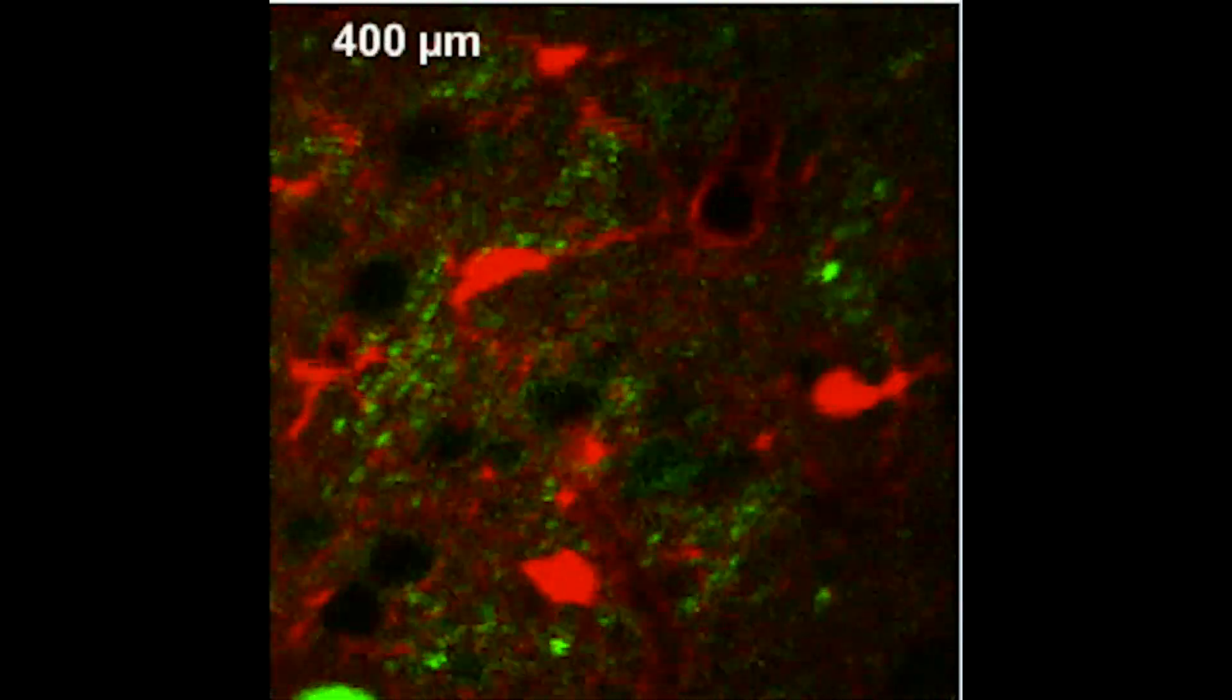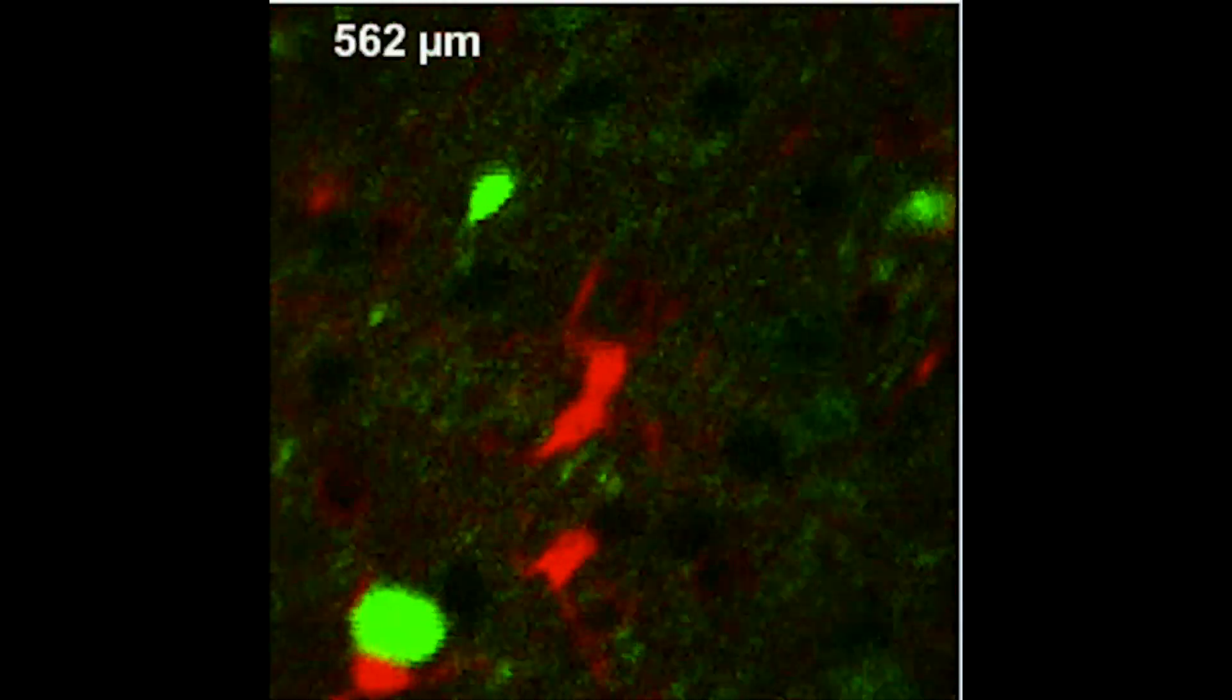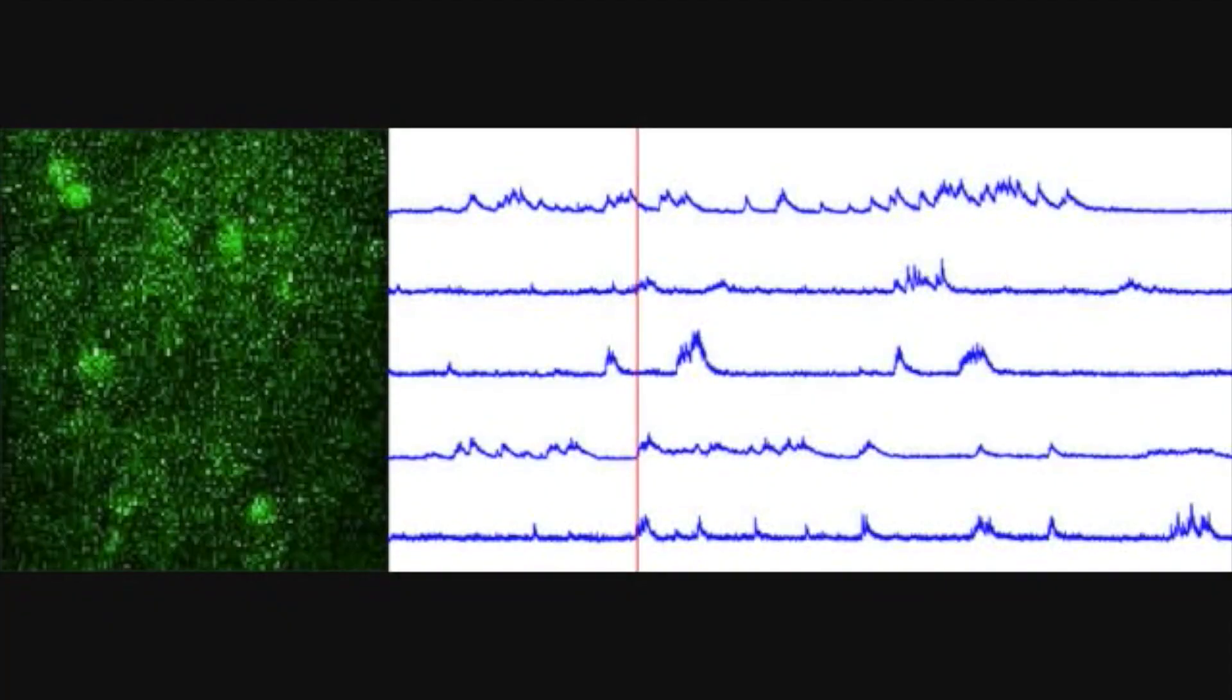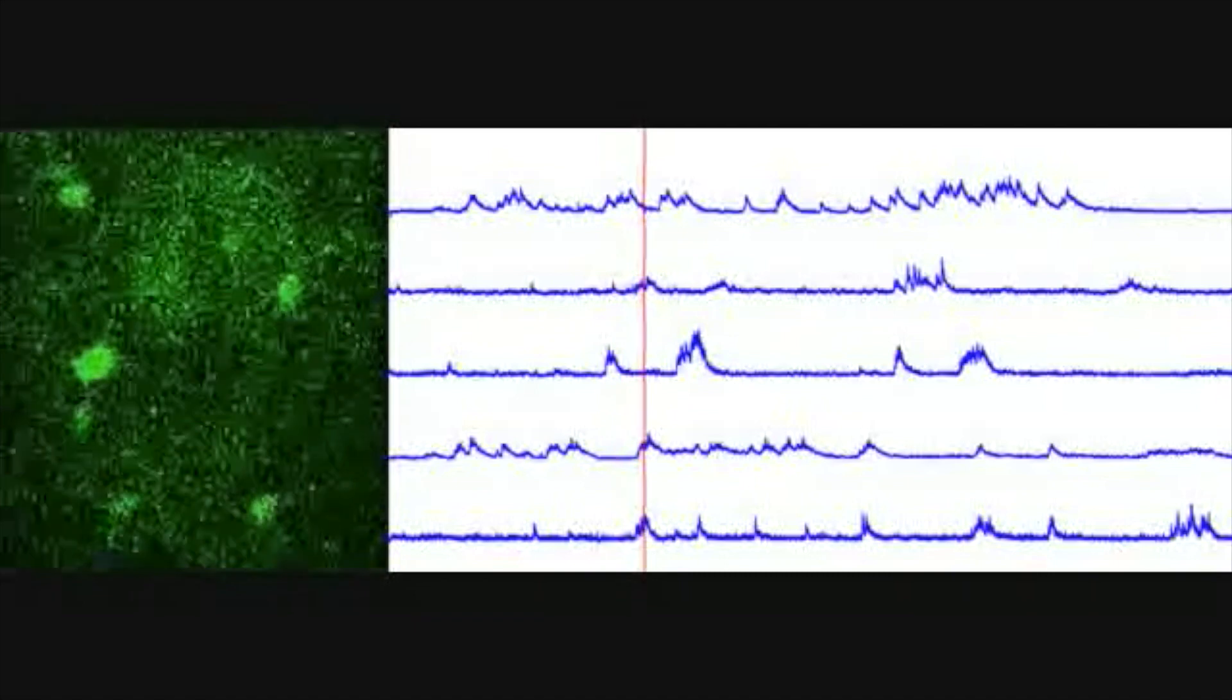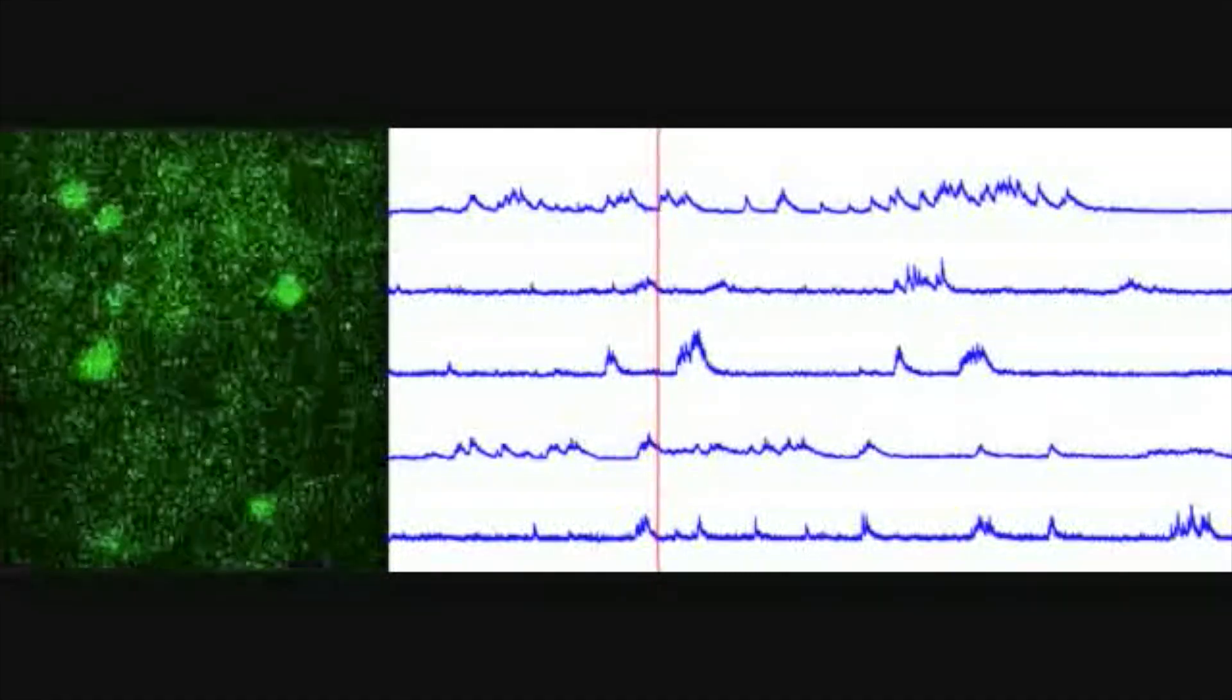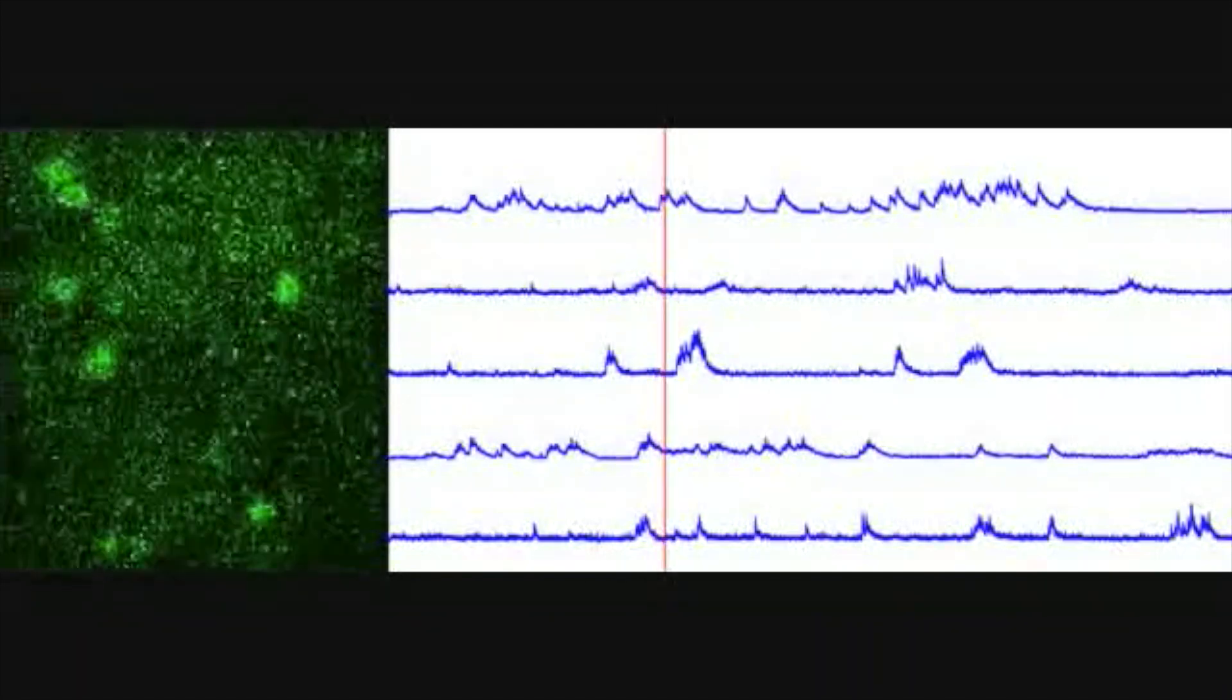To look inside the brain, special microscopes are used that can see through the tissue and observe the neuronal circuits at work. Non-linear microscopy, such as two-photon imaging, is well suited for imaging in light-scattering tissue, such as the brain.